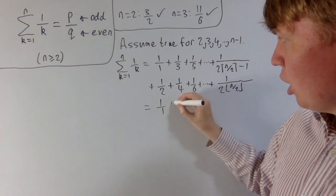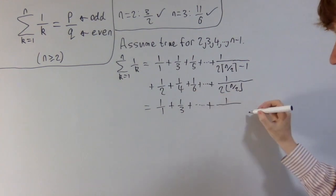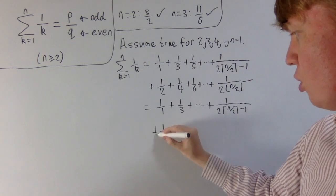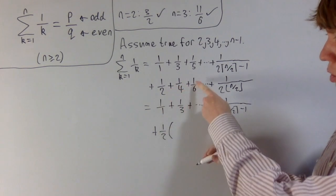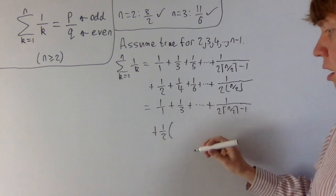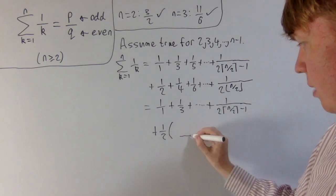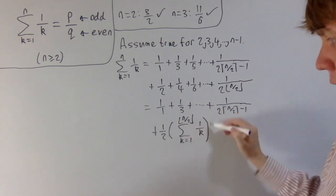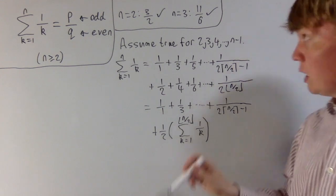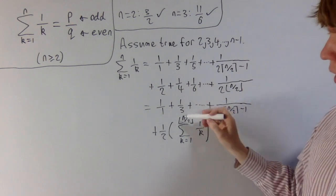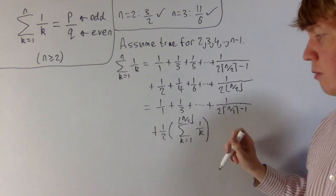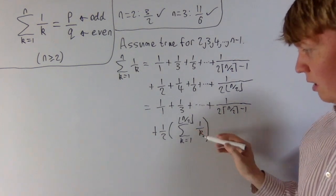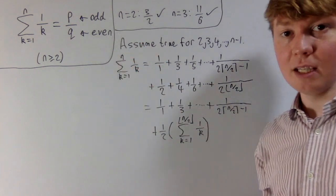Next, we leave the odd terms as they are, and with the even terms we take out a factor of 1/2 — this is the really important step that allows us to apply the inductive hypothesis. After factoring, what remains in the brackets is 1 over 1 plus 1 over 2 plus 1 over 3 and so on up to 1 over the floor of n over 2, which we write as (1/2) times the sum from k equals 1 to floor(n/2) of 1/k. The reason we needed n equals 3 in the base case is that for n equals 3 we'd have just the sum up to 1, which isn't of the form odd divided by even. So this approach works for n greater than or equal to 4.